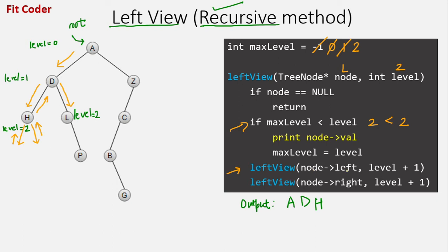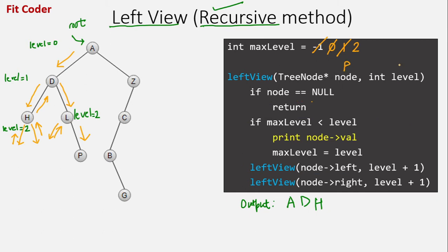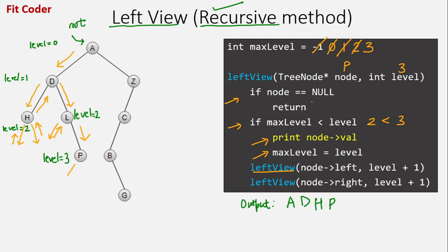We call left_view for the left of L, which is null, so that function returns. Then we call for the right of L, which is P, at level 3. At P the level is 3. We check if node is null, then compare max_level with level: max_level is 2 and level is 3, so we come inside and print P, then set max_level to 3. We call left_view for the left and right of P — both are null, so this function returns. The function called to P ends, we return to L, and the function called to L also ends.